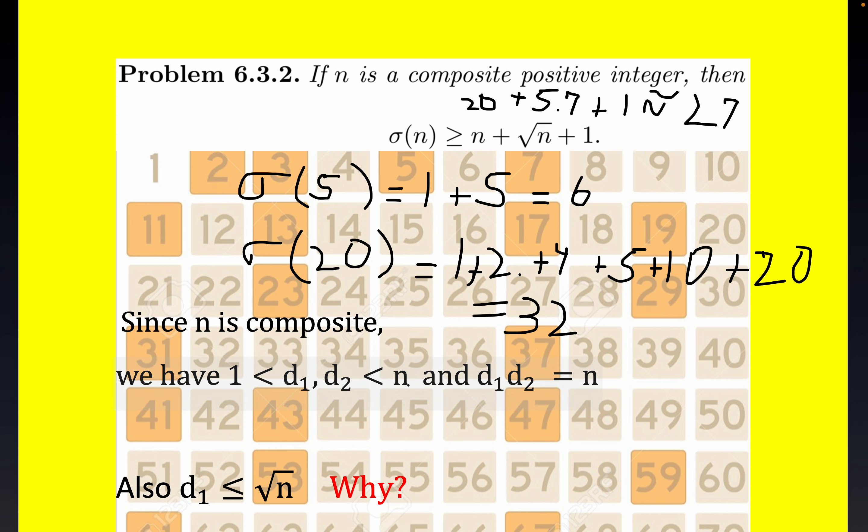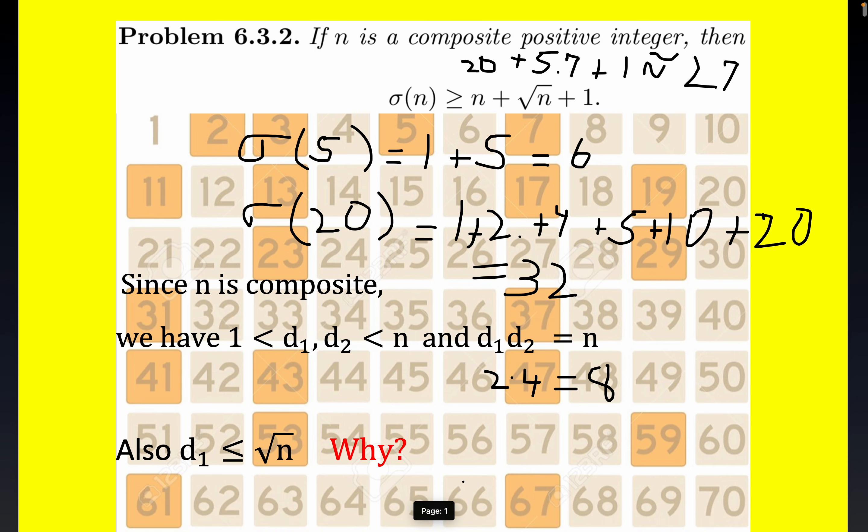This is literally the definition of what we mean by a composite number. For example, two times four equals eight, eight's certainly not a prime. That's because it's the product of two natural numbers that are greater than one and less than eight. So eight's a perfectly fine example of a composite number because it admits this factorization.